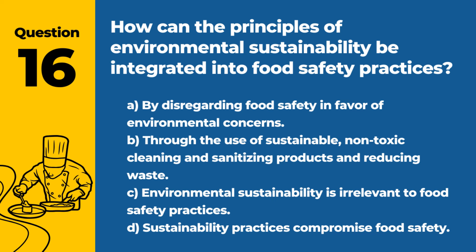Question 16. How can the principles of environmental sustainability be integrated into food safety practices? a. By disregarding food safety in favor of environmental concerns. b. Through the use of sustainable, non-toxic cleaning and sanitizing products and reducing waste. c. Environmental sustainability is irrelevant to food safety practices. d. Sustainability practices compromise food safety. Answer: b. Through the use of sustainable, non-toxic cleaning and sanitizing products and reducing waste. Integrating sustainability into food safety enhances both environmental and public health outcomes.